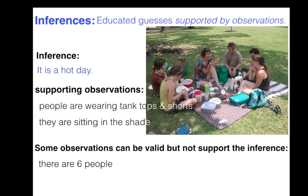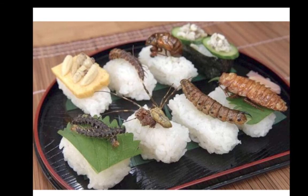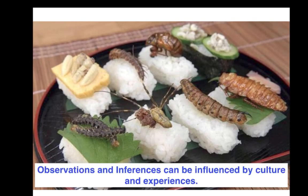However, there are many valid observations that don't support the inference that it's a hot day. For example, there are six people, and there's a picture with a red lid — those are good observations but don't tell you anything about whether it's hot. Now, observations are things that really cannot be argued against — they're the facts. Saying something is gross or will taste terrible are inferences based on cultural experiences. Be sure your observations are facts, not opinions.